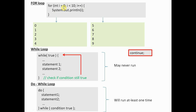So for this case, our i starts at 0. 0 is less than 10, so we're going to print out 0. Now we increase by 1 — 1 is less than 10, so we print out 1, increase by 1, so now i is 2. 2 is less than 10, so we print 2, and we keep doing this. We get to 9, which is less than 10, so we print it out and add 1. Now 10 is not less than 10, so this is false and we don't continue executing — we just jump down and follow through with whatever instructions follow.